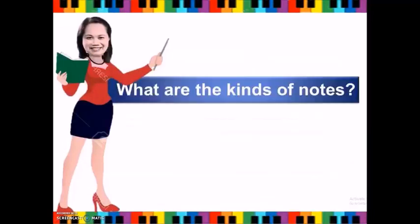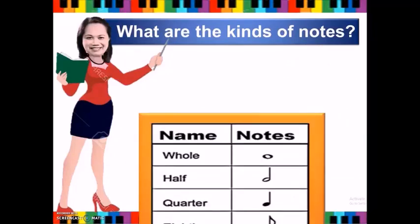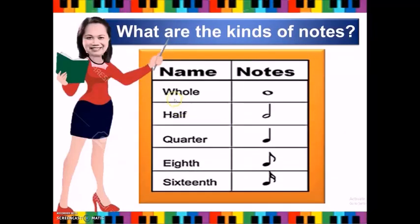What are the kinds of notes? We have the whole note, which has a head. Half note, which has a head and a stem. Quarter note, which has a head, stem, and a shade. Eighth note has a head, stem, shade, and one flag. And sixteenth note has a head, stem, shade, and two flags.